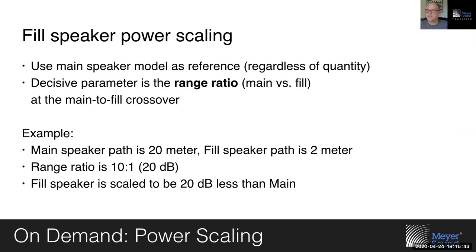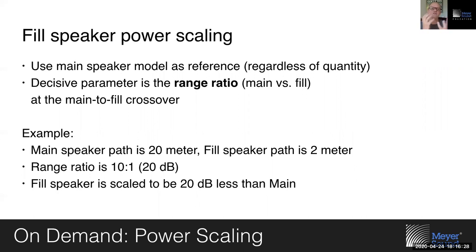Power scaling is a two-step process. First, determine your main speaker model as a reference, regardless of quantity. If Leo is the main PA, whether it's 12 or 16 elements, Leo is the reference. The second step is: what is the range ratio? What is the custodial arrangement between the main speaker and the fill speaker intended to cover that minority of the audience? The decisive parameter is the so-called range ratio, which keeps showing up as a crucial concept in all these design dilemmas.